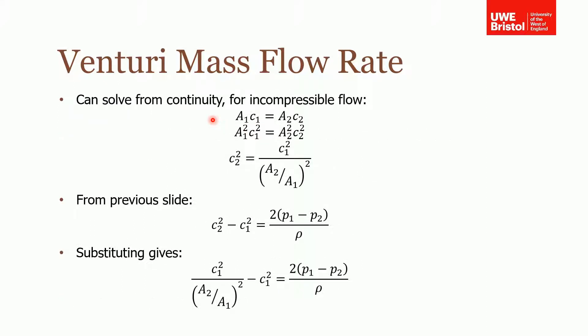So this is where continuity comes into it. Because from continuity for an incompressible flow, we know what flows in must flow out. Therefore the area times the velocity at one is equal to the area two times velocity at two. And if we square both sides, we end up with this expression. Then I'm going to rearrange to make c₂ the subject, or c₂² I should say. So now we have an expression for c₂². And from the previous slide we had this expression from Bernoulli's. So we can substitute this equation that we've derived from continuity into Bernoulli's and we end up with this one.